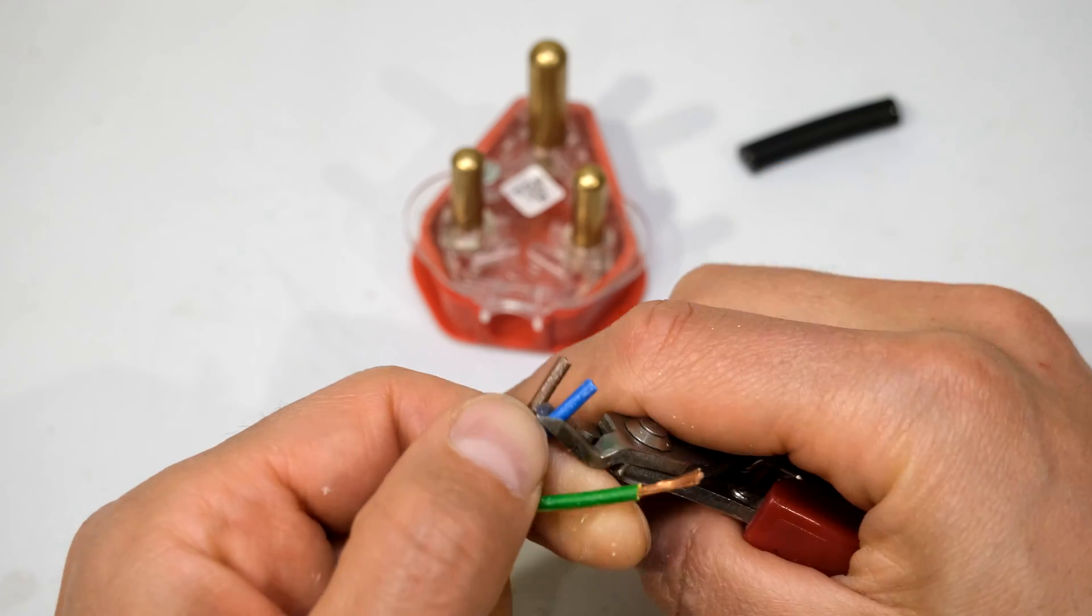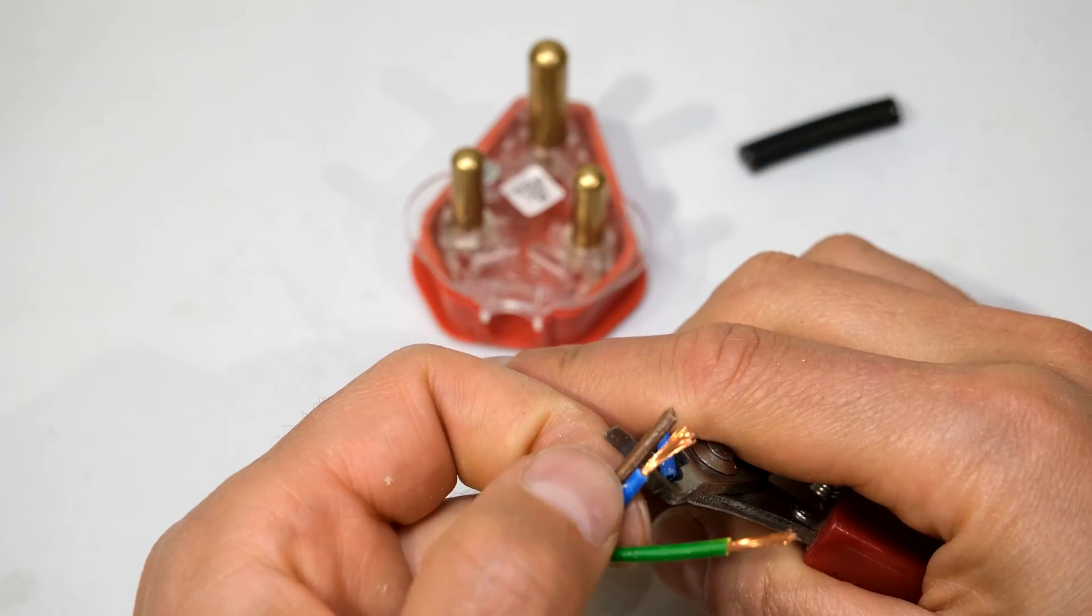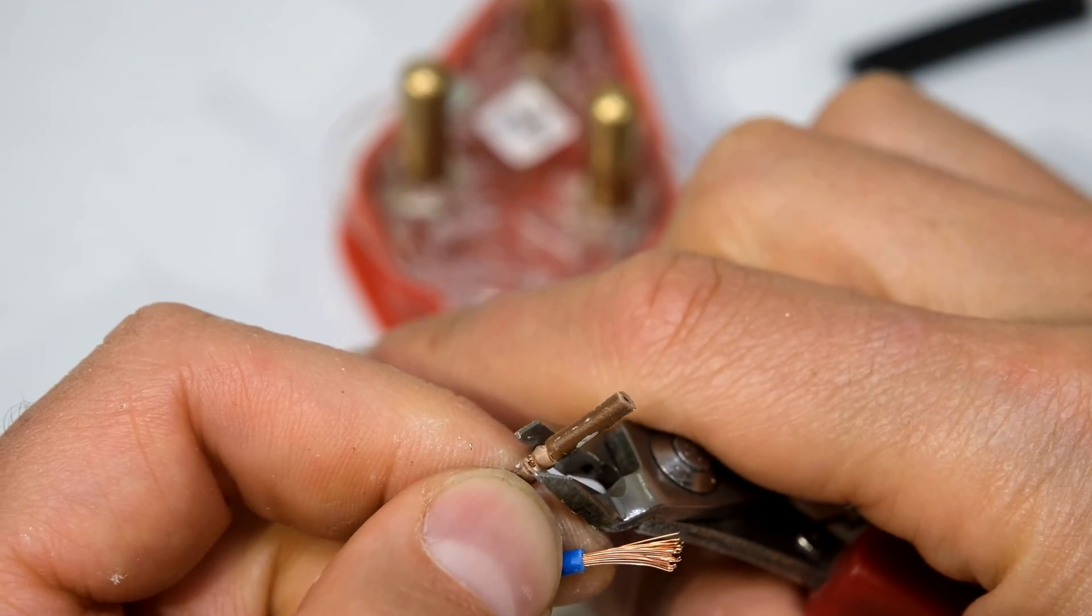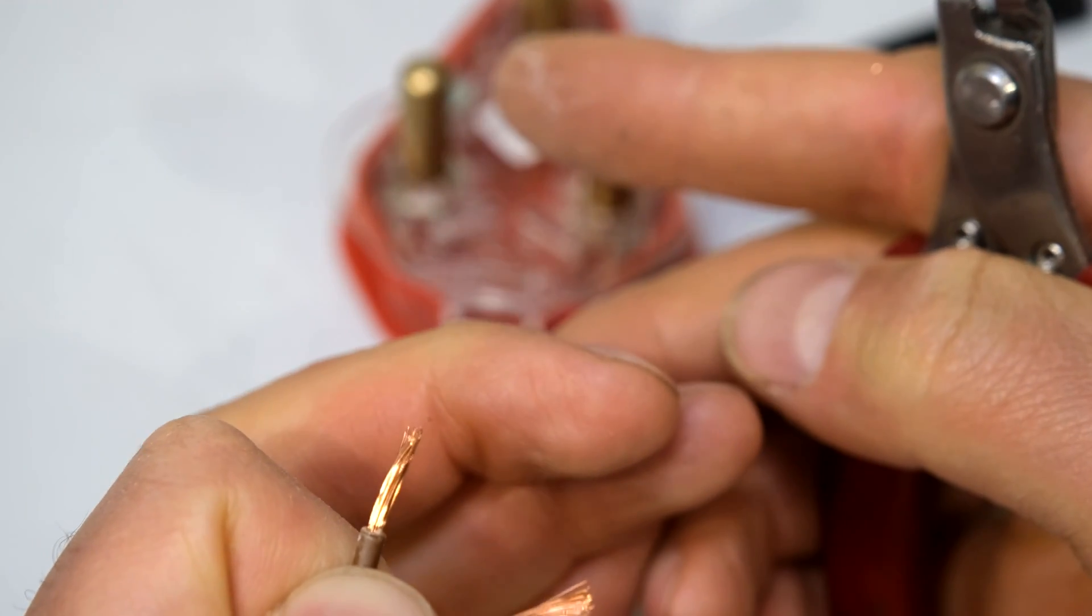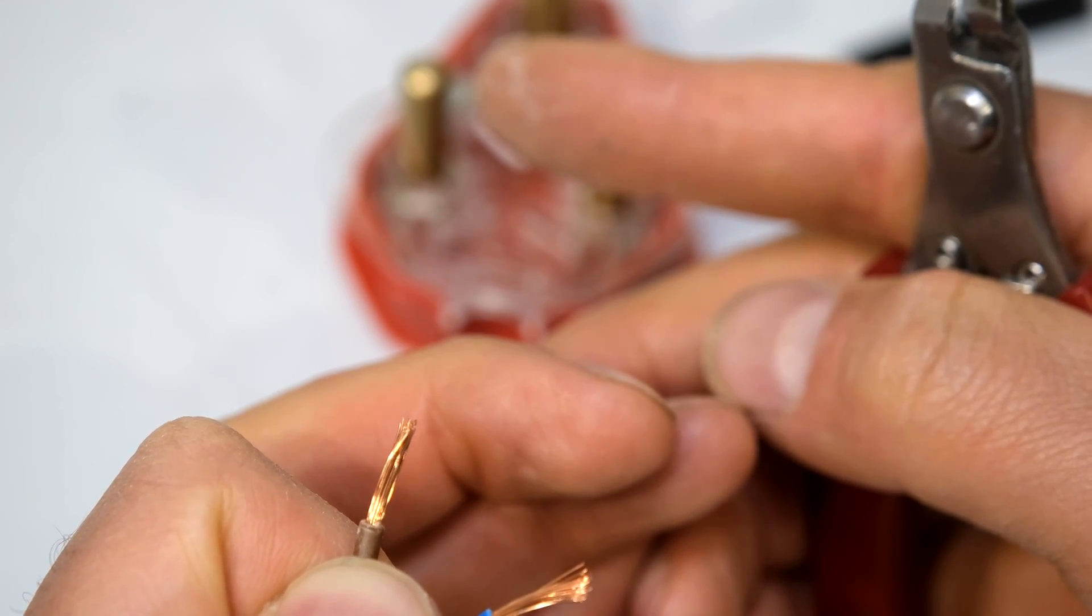Now I remove the insulation of the neutral and the live wire. Please note, I do not cut through the insulation. What I do is it's more of a pulling function and a tearing. As you can see, I tear the insulation away and this way I haven't damaged any of the copper strands.